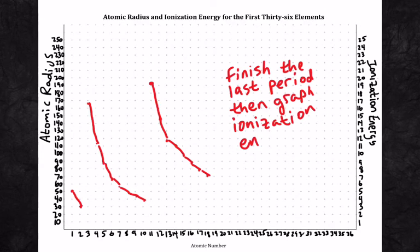Now what we have to do is graph out ionization energy, and this time we're going to use the scale on the right y-axis. Our first number for ionization energy is 13.6. My second number is 24.6, and now I'm going to connect those lines.